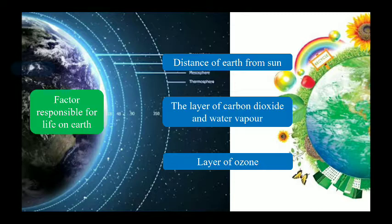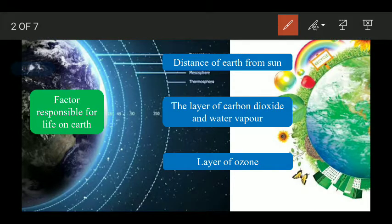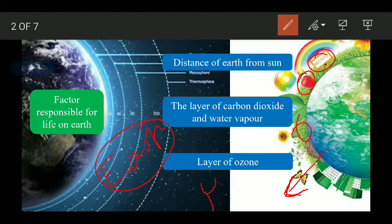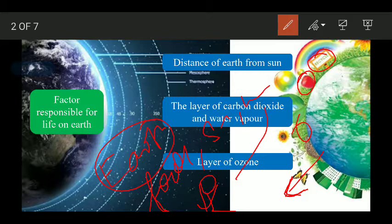We know that our Earth is the only planet on which life is possible. Why? Because Earth has all the conditions for survival of plants and animals. Both plants and animals can survive on Earth and both are interdependent on each other. We human beings get many useful things from these plants and animals — we get food, shelter, medicine, and many other things.